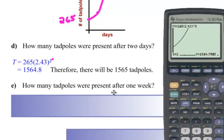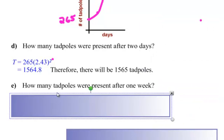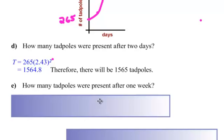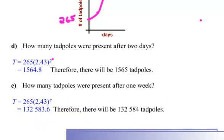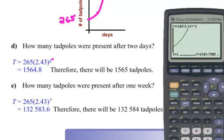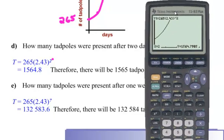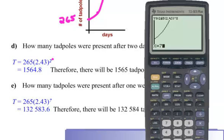Okay. Let's do this. Next one. How many tadpoles were present after one week? That's the same thing as we just did. One week is just 7 days. So, there's the 7 up there. Do it on your calculator. And you come up with 132,584 tadpoles. I just rounded it off. And on this, you would just go x equals 7. Hit enter.